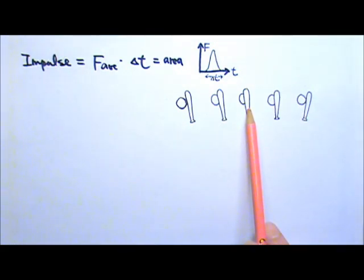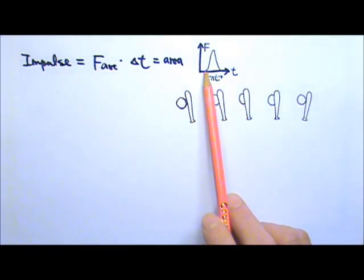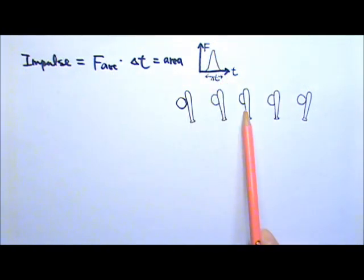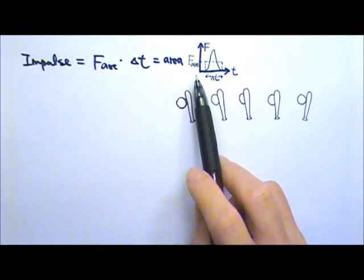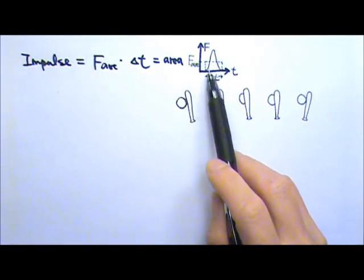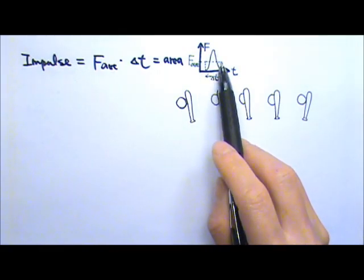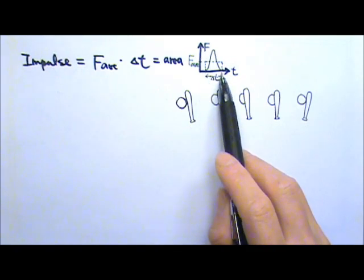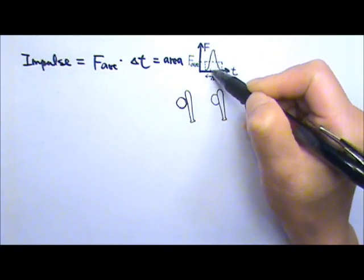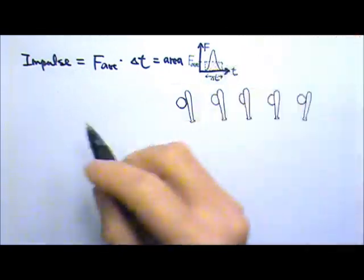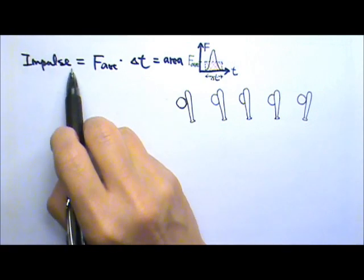The more the deformation, the stronger the force. So the force as a function of time looks like this, with the force increasing and then decreasing. The average force would be the equivalent constant force for this variable force. If the force is constant over the entire time delta T, the area of the two graphs would be exactly the same, which means exactly the same amount of impulse.